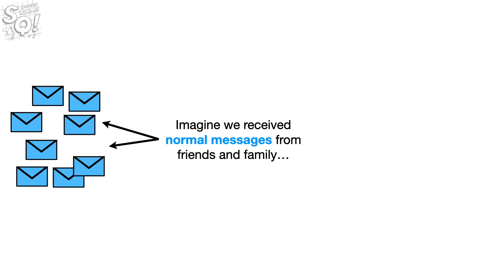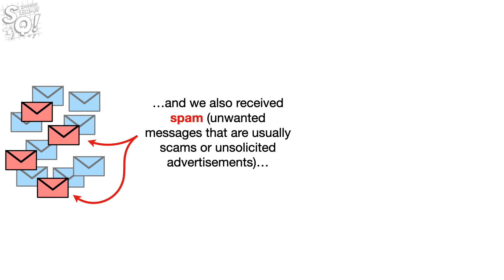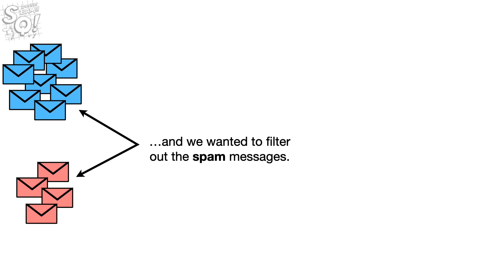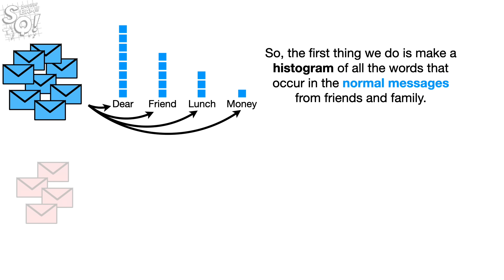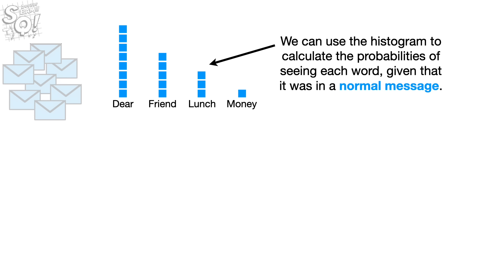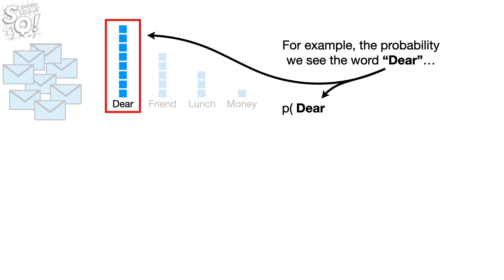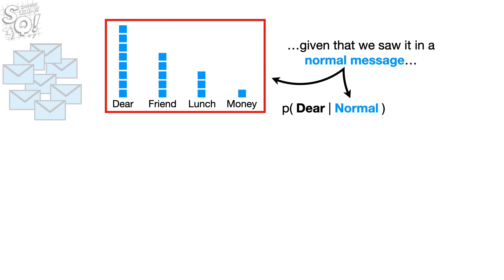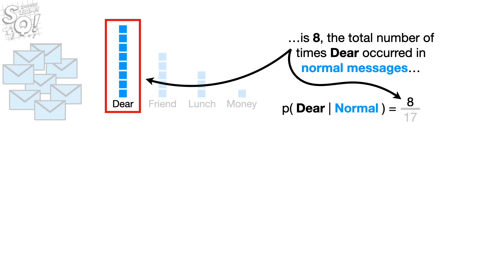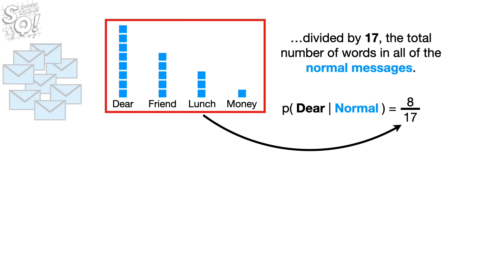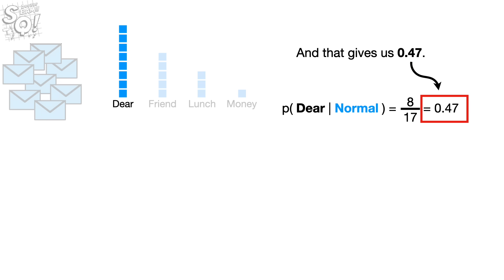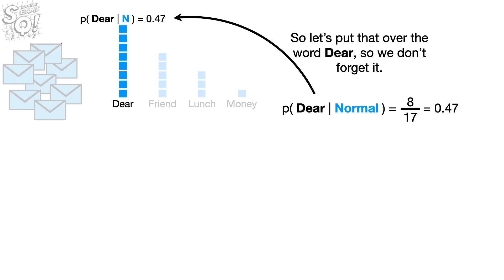Imagine we receive normal messages from friends and family, and we also receive spam — unwanted messages that are usually scams or unsolicited advertisements — and we want to filter out the spam. The first thing we do is make a histogram of all the words that occur in the normal messages from friends and family. We can use the histogram to calculate the probabilities of seeing each word given that it was in a normal message. For example, the probability we see the word 'dear,' given that we saw it in a normal message, is 8 — the total number of times 'dear' occurred in normal messages — divided by 17, the total number of words in all of the normal messages. And that gives us 0.47. So let's put that over the word 'dear' so we don't forget it.